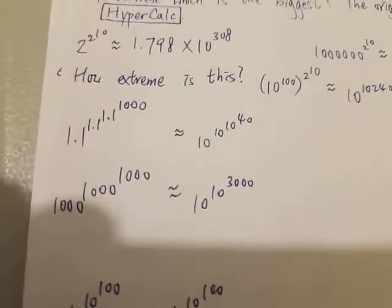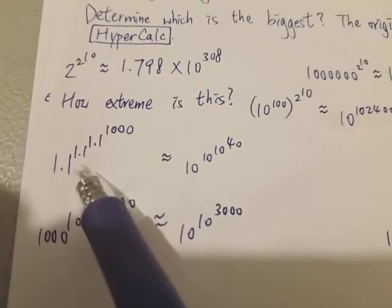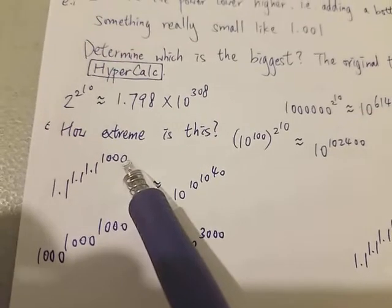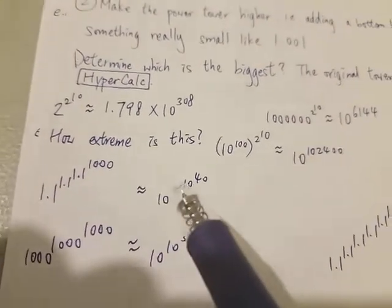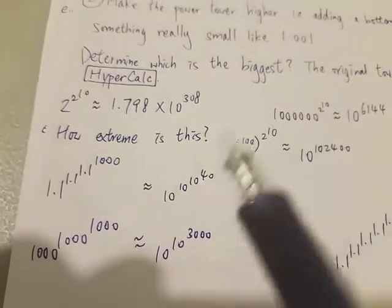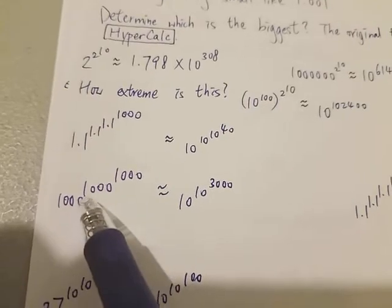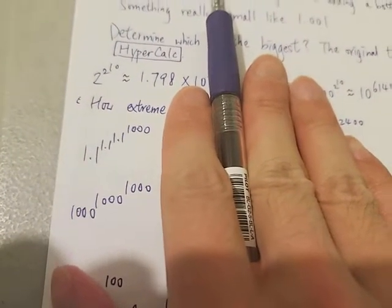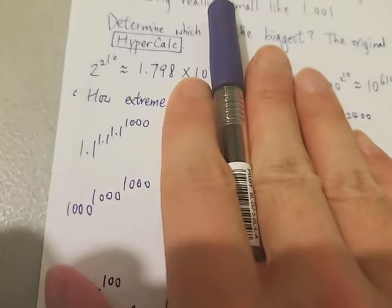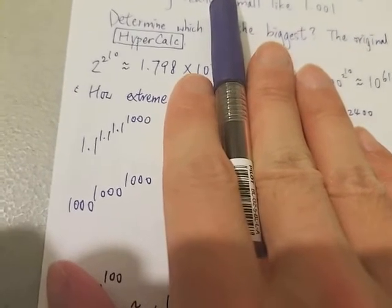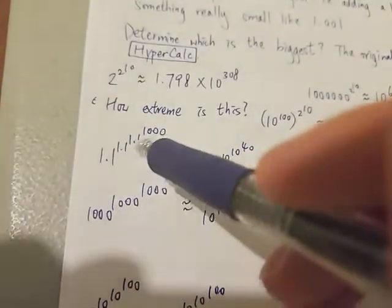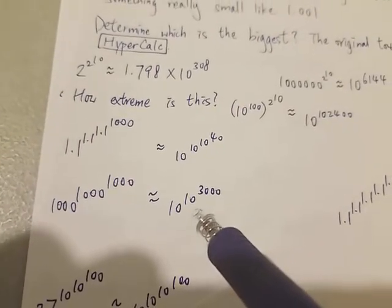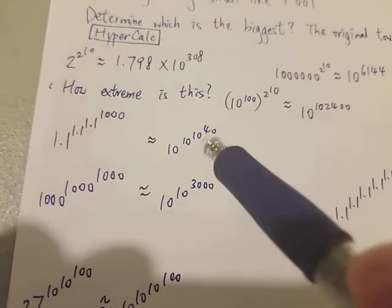Let's look at another example. 1.1 is a pretty small number. So 1.1 to the 1.1 to the 1.1 to the 1,000 — four levels including the base — is around 10 to the 10 to the 10 to the 40. What about 1,000 to the power of 1,000 to the power of 1,000? Without looking at the answer, which one do you think is bigger? Most people would believe the bottom one — 1,000 to the 1,000 to the 1,000 — because those are much larger numbers. The only difference is that the first has four levels and this one has three. But the result is around 10 to the 10 to the 3,000, which is much smaller.